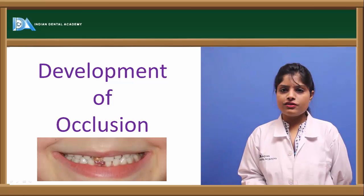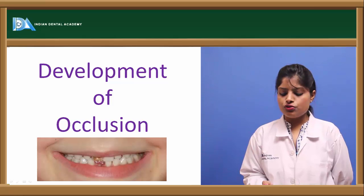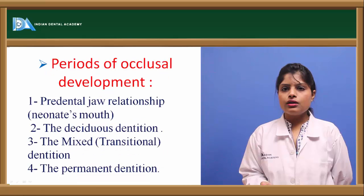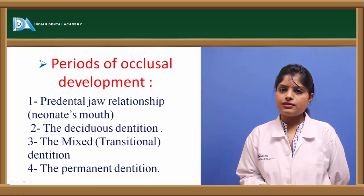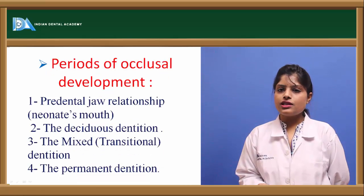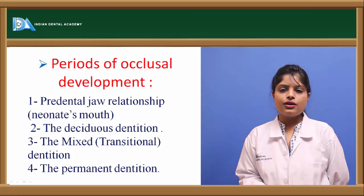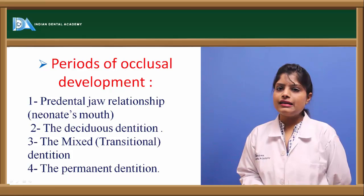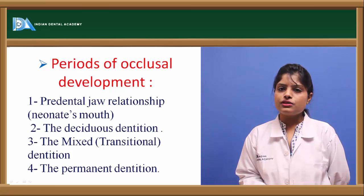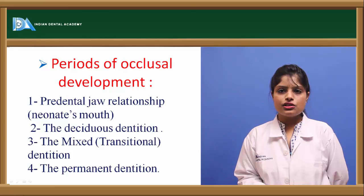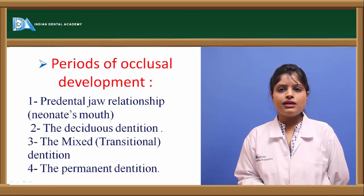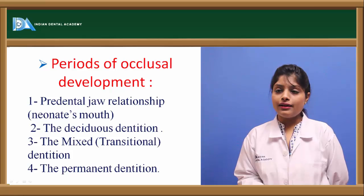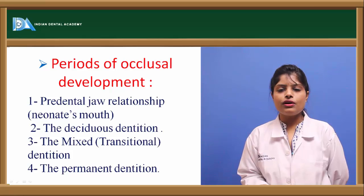Today we'll be discussing the development of occlusion. Occlusion in a general context is the contact between antagonistic teeth, whereas in technical terms it is the interdigitation of the maxillary and mandibular teeth when they approximate each other, either at rest or in motion.